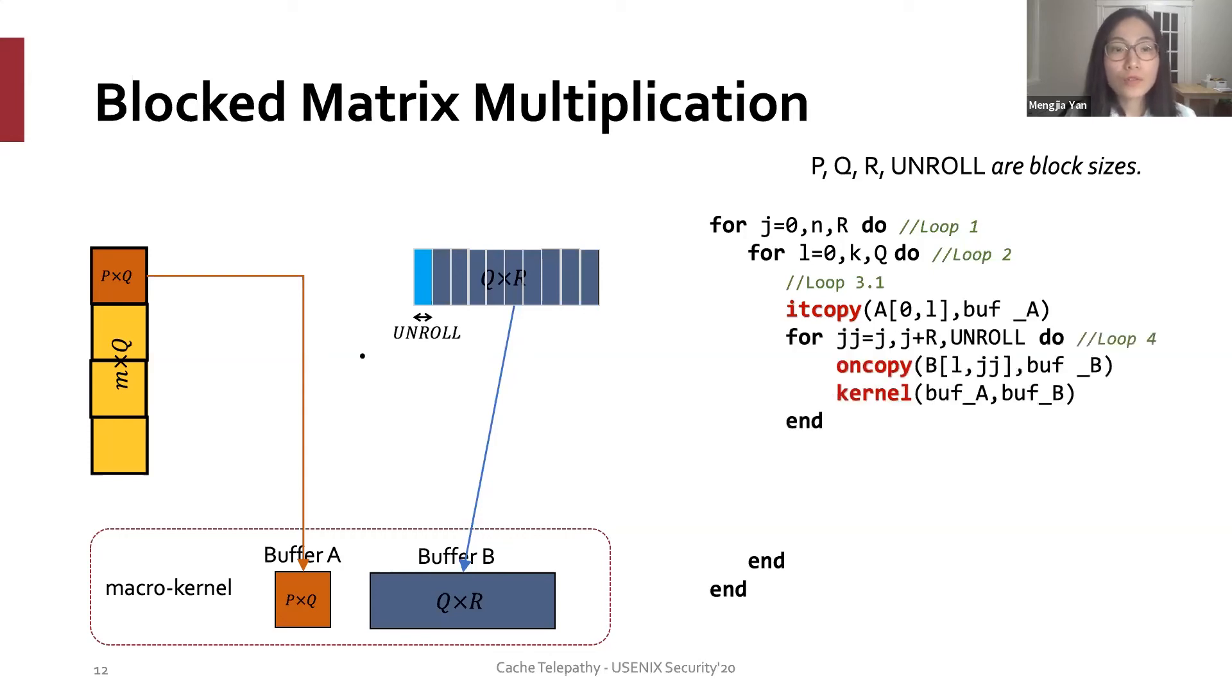This corresponds to loop 4. Next, the algorithm packs the rest of sub blocks in matrix A to update buffer A and reuse the data in buffer B for the micro kernel. These operations correspond to the rest iterations of loop 3.